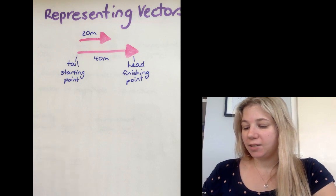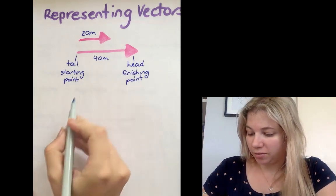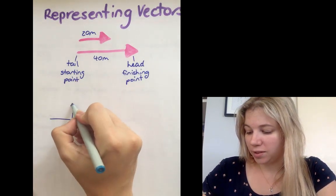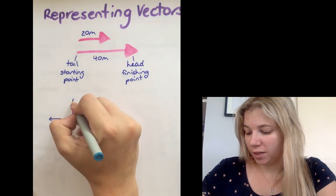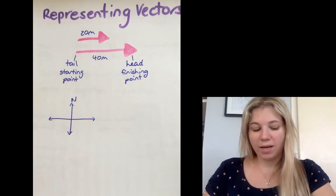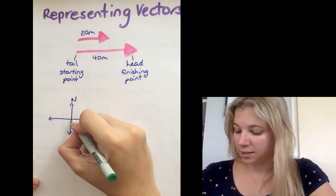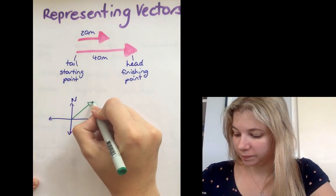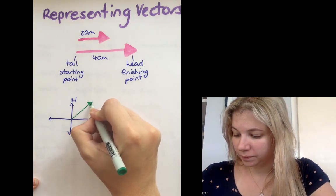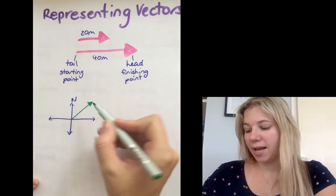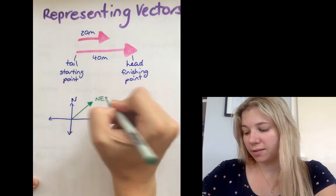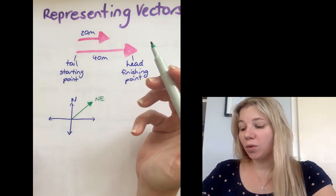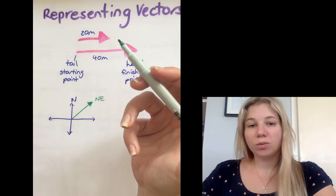Often you'll see vectors represented as part of a north, south, and east, west symbol here. So if this is north, then you might actually see the vector represented like this, and that would indicate that the direction here is northeast.